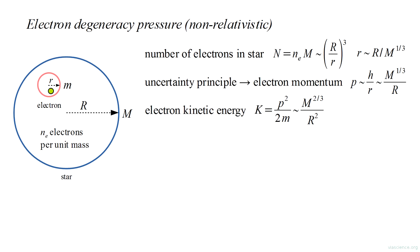The non-relativistic expression for kinetic energy of an electron is its momentum squared over twice its mass. This varies as the two-thirds power of star mass over the square of star radius. This kinetic energy is not dependent on the star's temperature. It's an intrinsic quantum mechanical property, even at absolute zero.